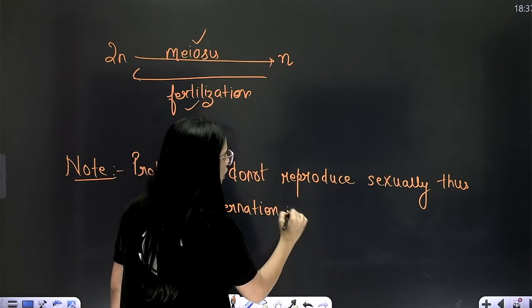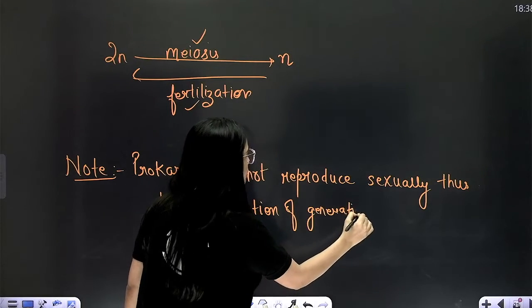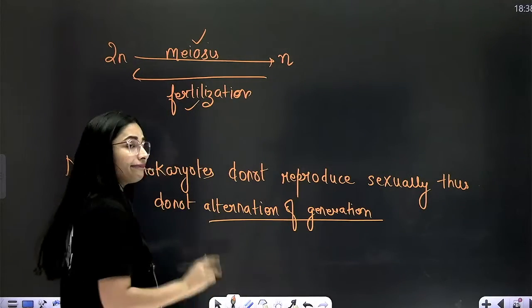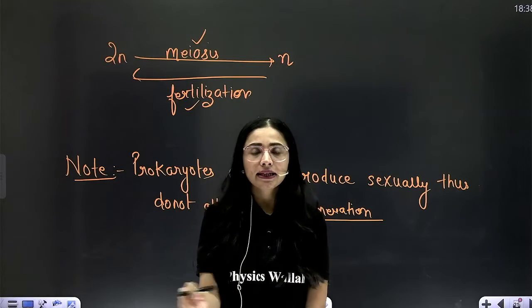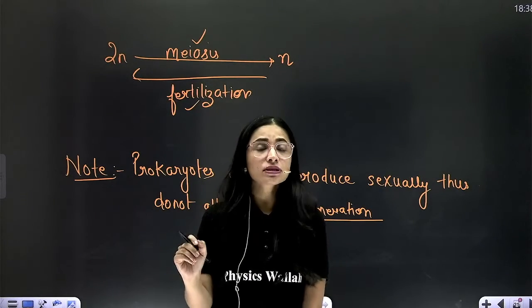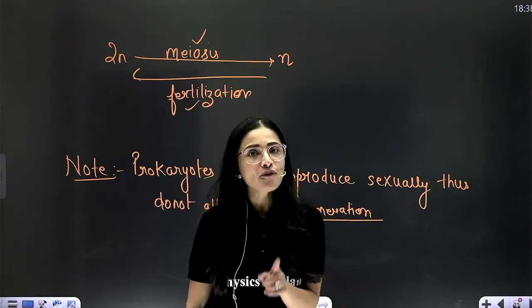They do not involve this concept of alternation of generation. Otherwise, every single organism from kingdom protista till kingdom animalia, all organisms show sexual reproduction and they do exhibit this alternation of generation.